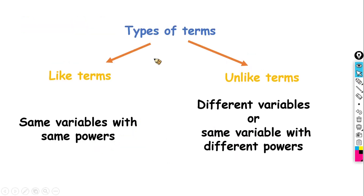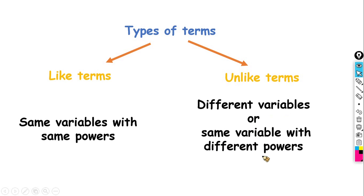You just have to remember these two things: like terms have the same variables with the same powers; unlike terms have different variables, or the same variables with different powers. That's all for today. Thank you.